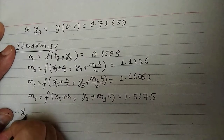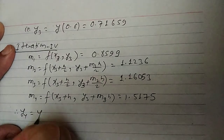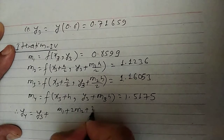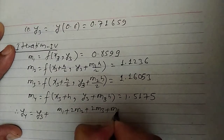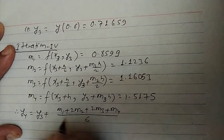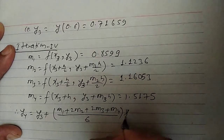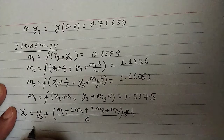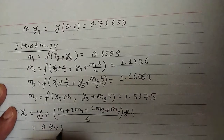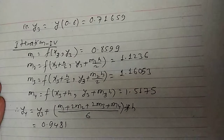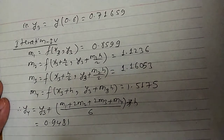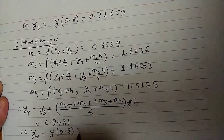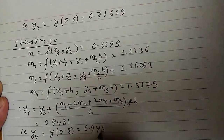Therefore y4 = y3 + (m1 + 2·m2 + 2·m3 + m4)/6 × h. With all values known, y4 = 0.9481. So y at 0.8 equals 0.9481.